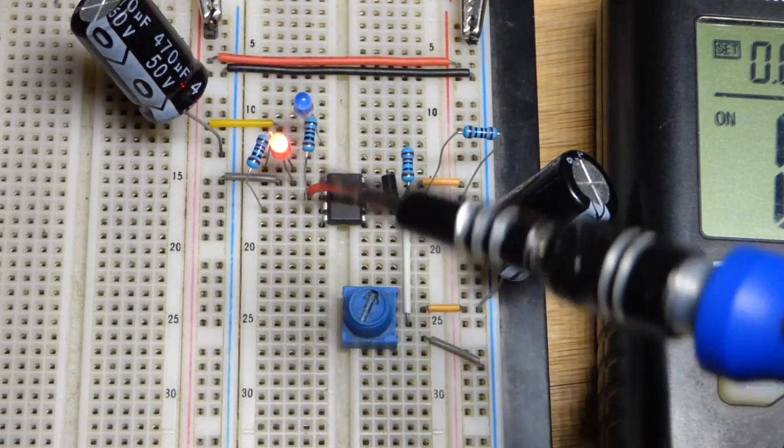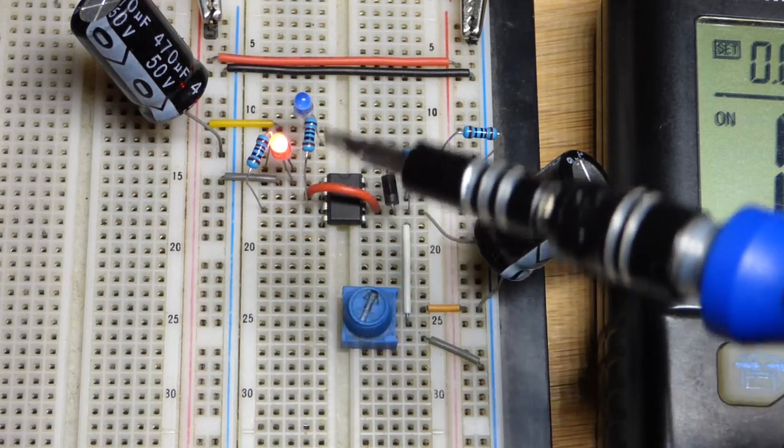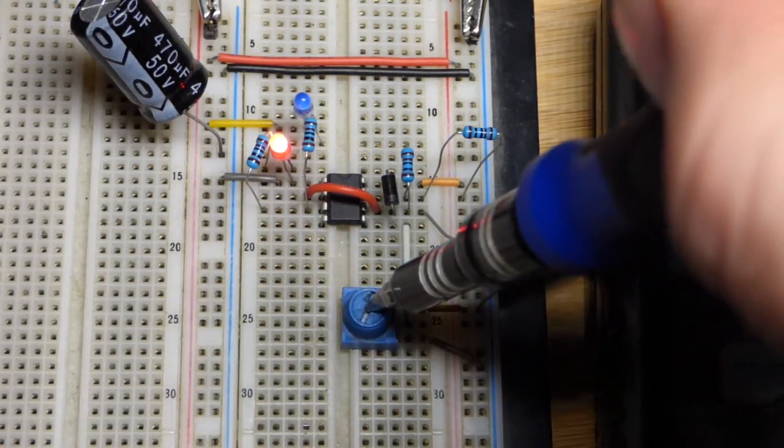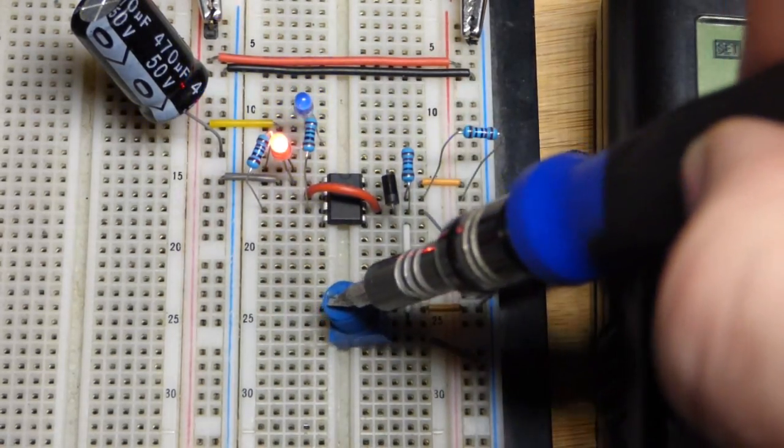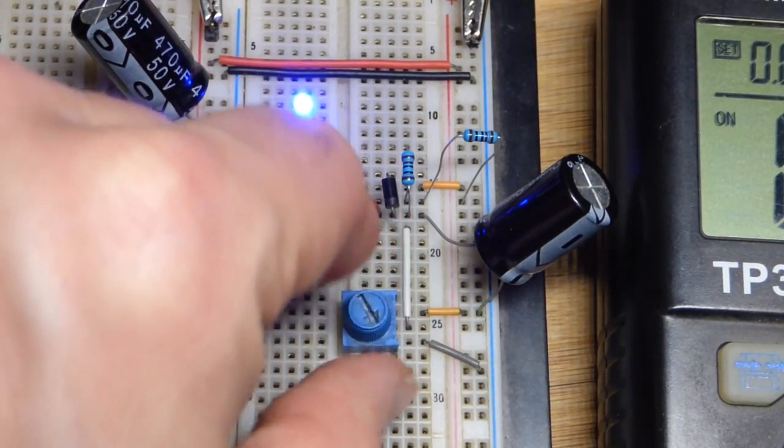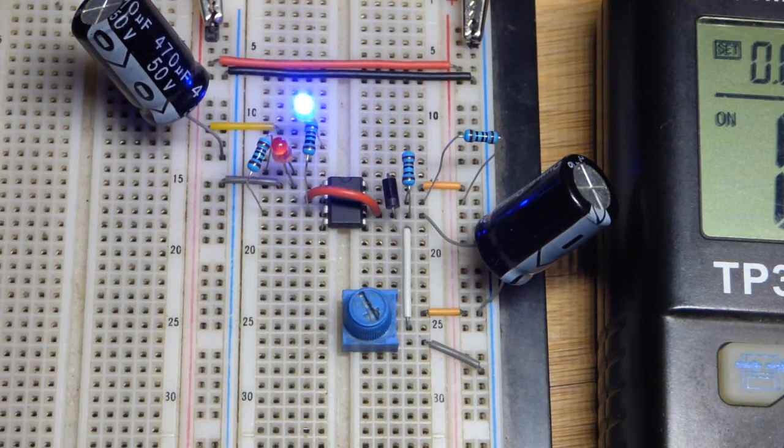So we can adjust the duty cycle, how close they are to being on equally. Now the output is high more than it is low. And now I can turn it to where the output, for some reason, that doesn't want to stick, probably because of the angle I'm pushing it. Now the output wants to be low more than it wants to be high.